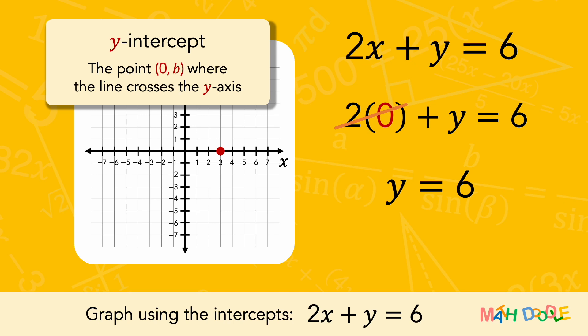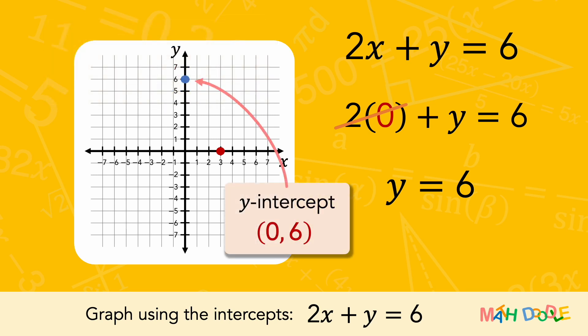So, when x is 0, y is 6. This tells us that the line has a y-intercept of (0, 6), where the line crosses the y-axis.